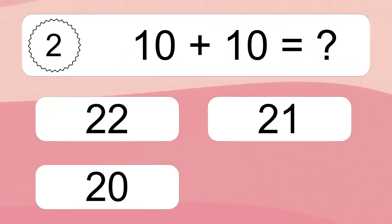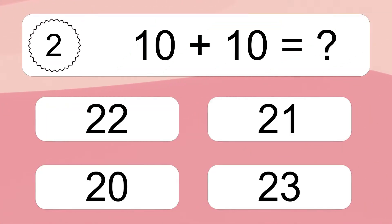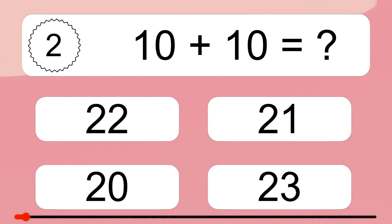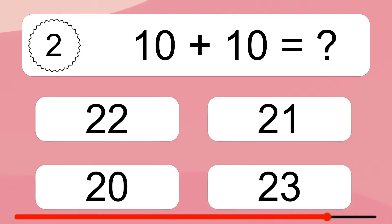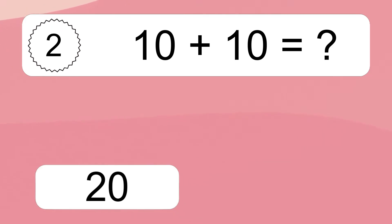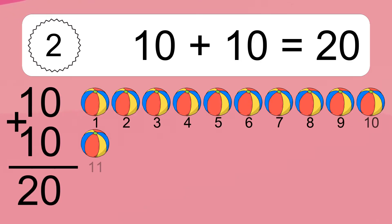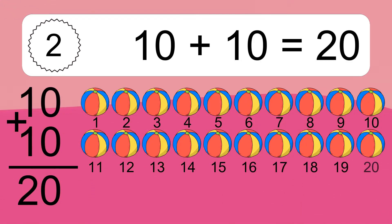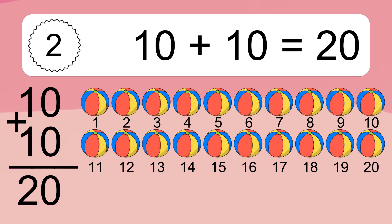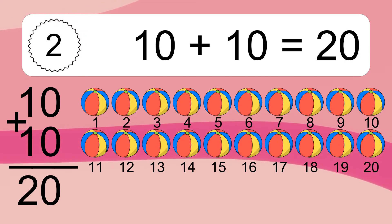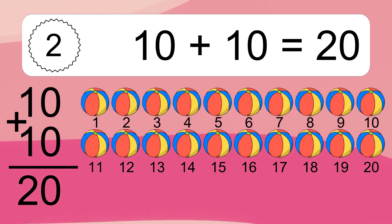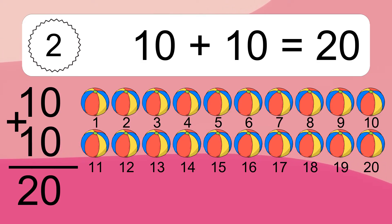10 plus 10 equals what? 10 plus 10 equals 20. Let's count it. 1, 2, 3, 4, 5, 6, 7, 8, 9, 10, 11, 12, 13, 14, 15, 16, 17, 18, 19, 20.